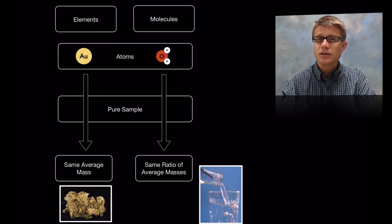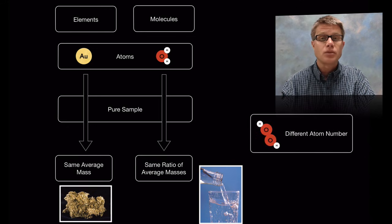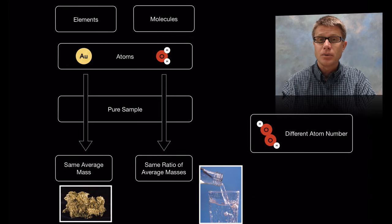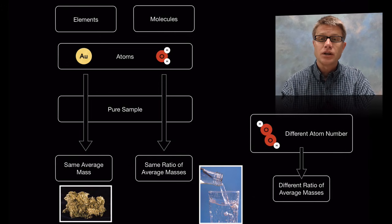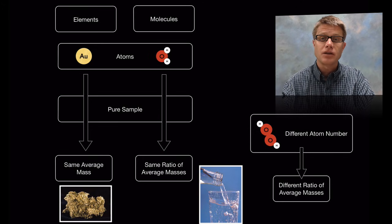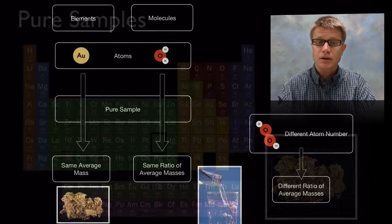But let's say we find something else that's made of oxygen and hydrogen. A good example could be hydrogen peroxide which is actually two oxygens and two hydrogens. We would find since it has a different atom number it's going to have a different ratio of average masses. It's still going to have a consistent ratio through all different size of the objects, but it's going to have a different ratio compared to that of water.